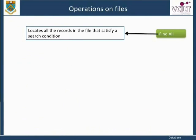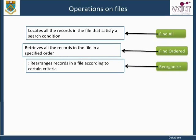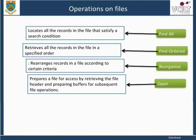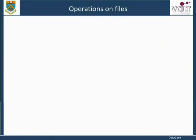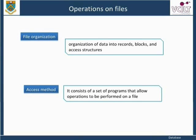Further operations include: Find All, which locates all records in the file satisfying a search condition; Find Ordered, which retrieves all records in a specified order; Reorganize, which rearranges records in a file according to certain criteria; Open, which prepares a file for access by retrieving the file header and preparing buffers for subsequent operations; and Close, which signals the end of using a file. File organization generally refers to the organization of data into records, blocks, and access structures. Access method consists of a set of programs that allow operations to be performed on a file. We are going to study three file organizations: heap files, sorted files, and hash files, and their related access methods.